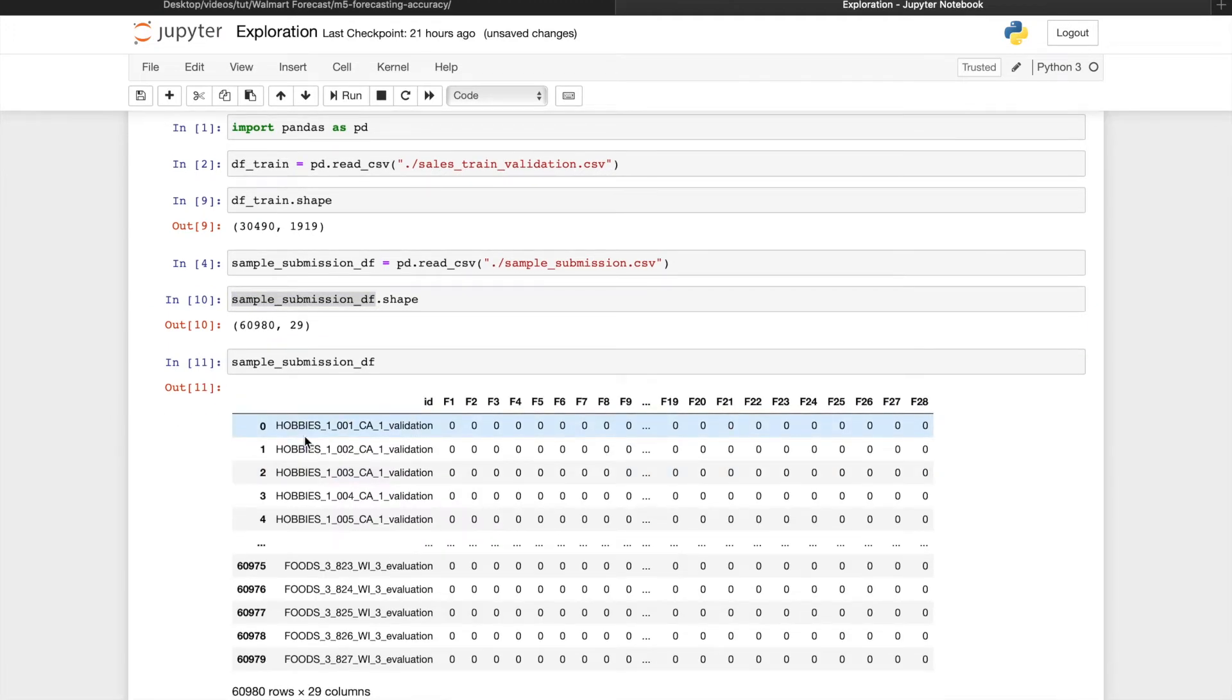And we'll enter these forecasts in all the validation entries, then we want to make forecasts for another 28 days right after, with day numbers 1942 to 1969.